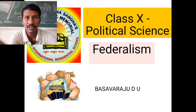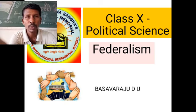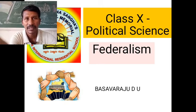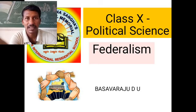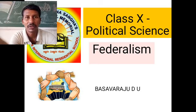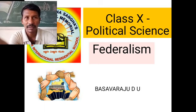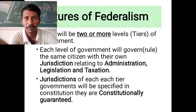The first feature is that there will be two or more different levels or tiers of government in federalism. The second feature is that each level or tier will have its own jurisdictions, which are mainly relating to administration, legislation, and taxation.